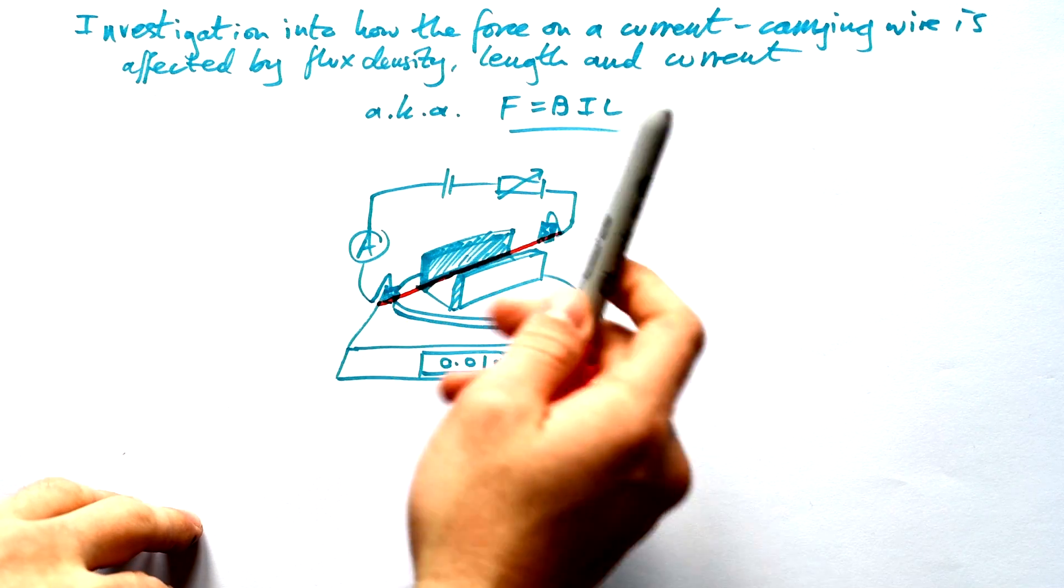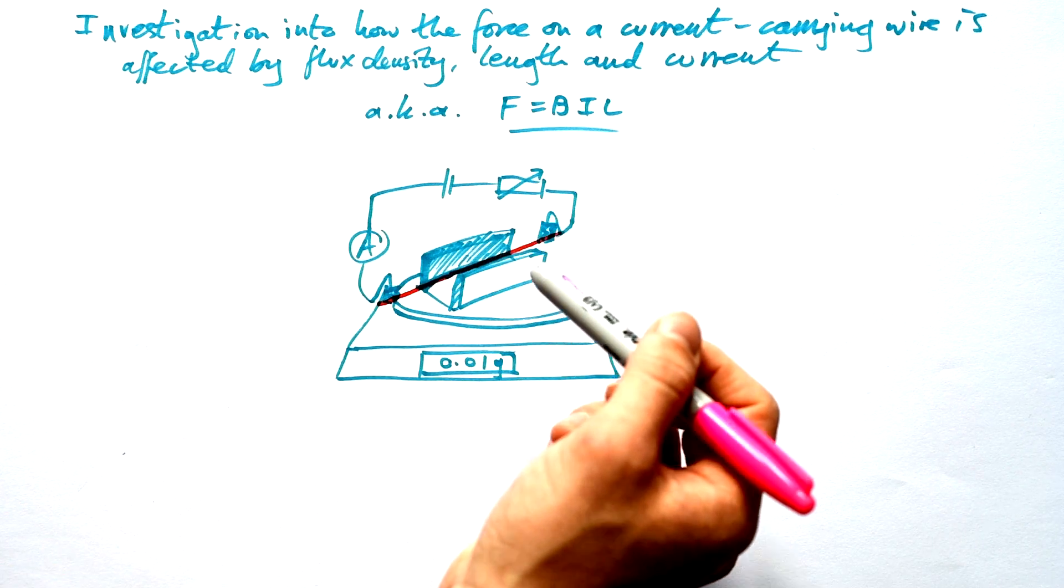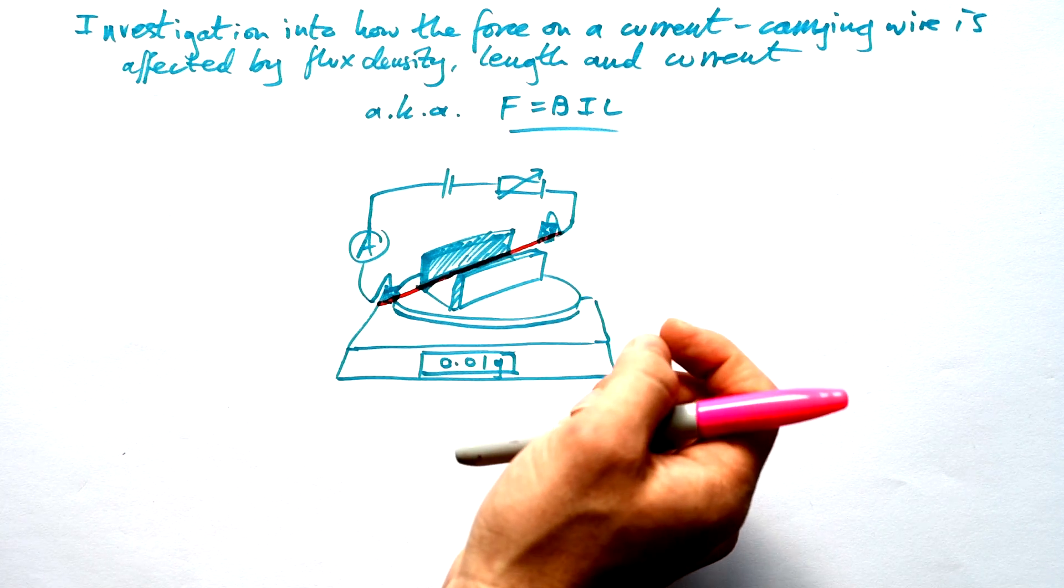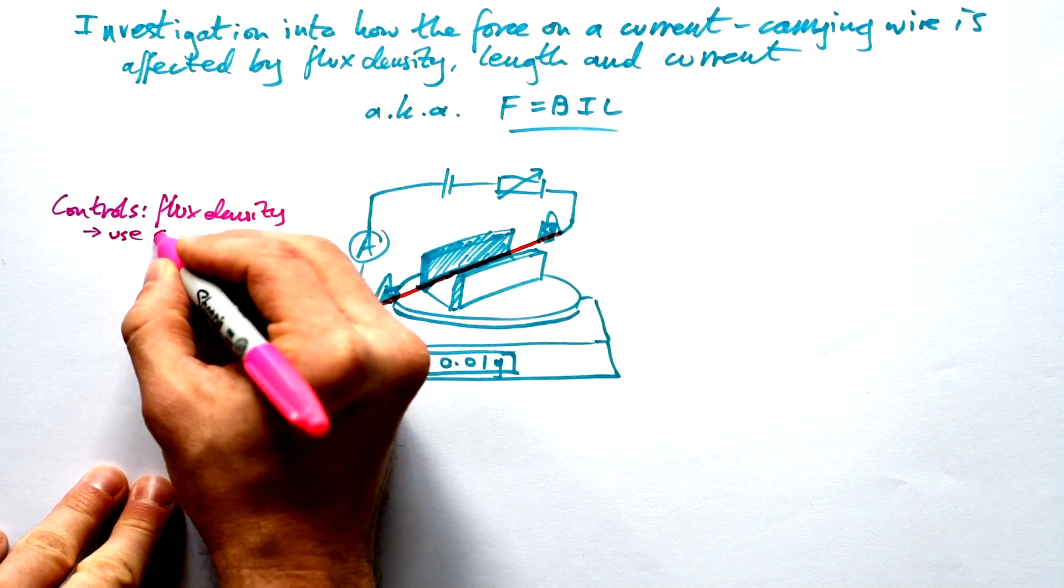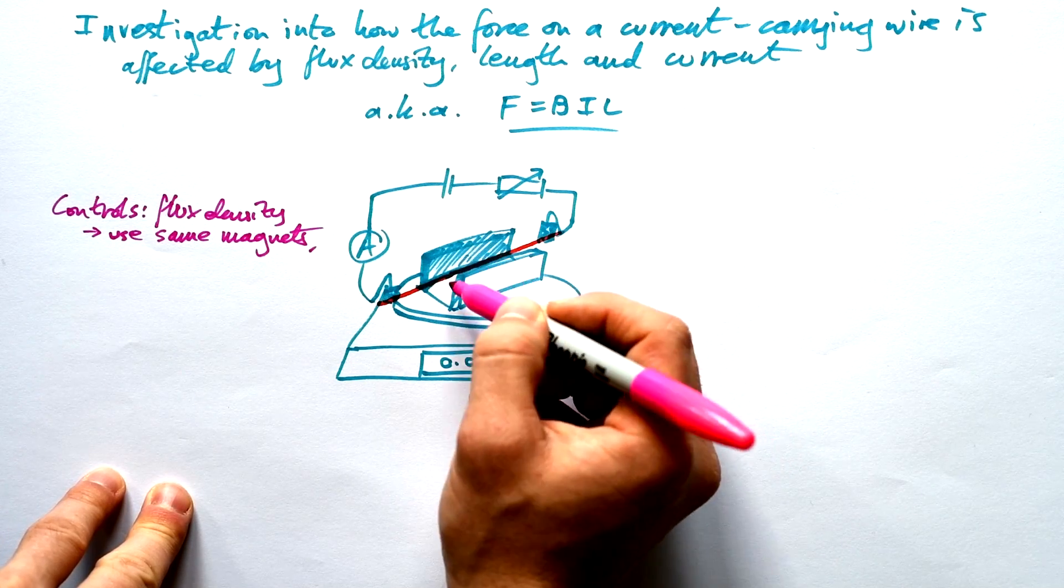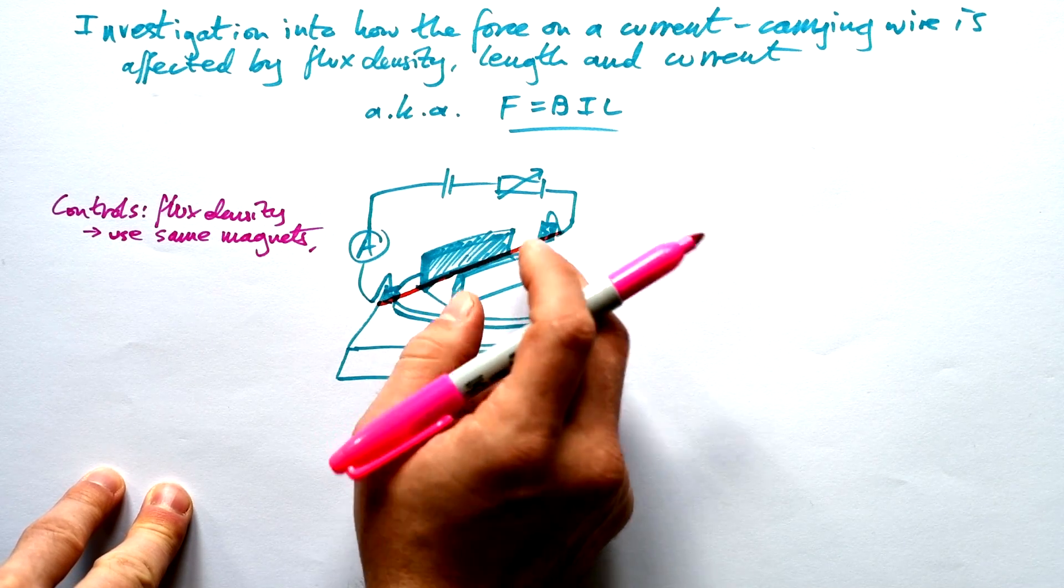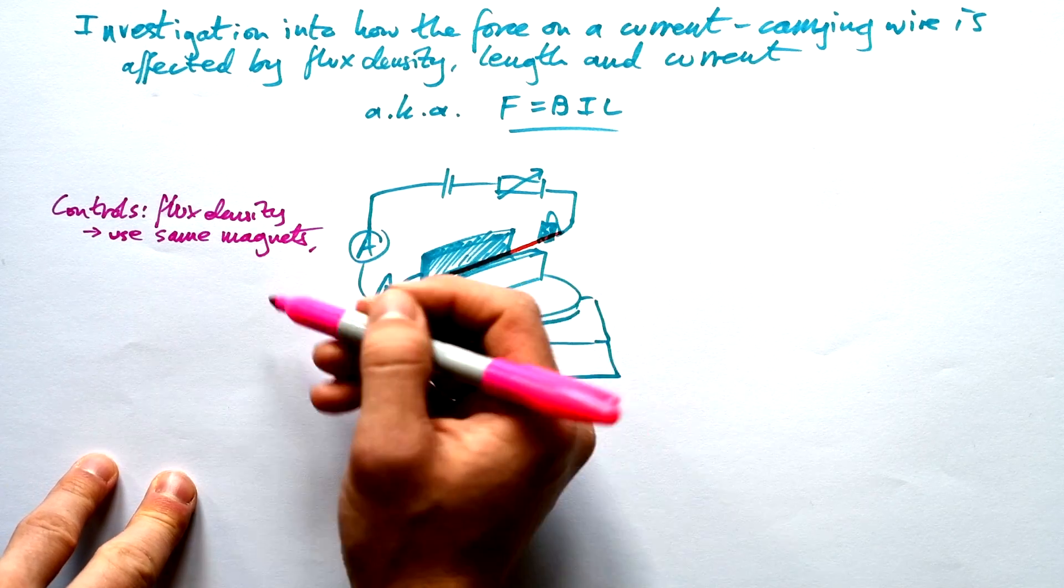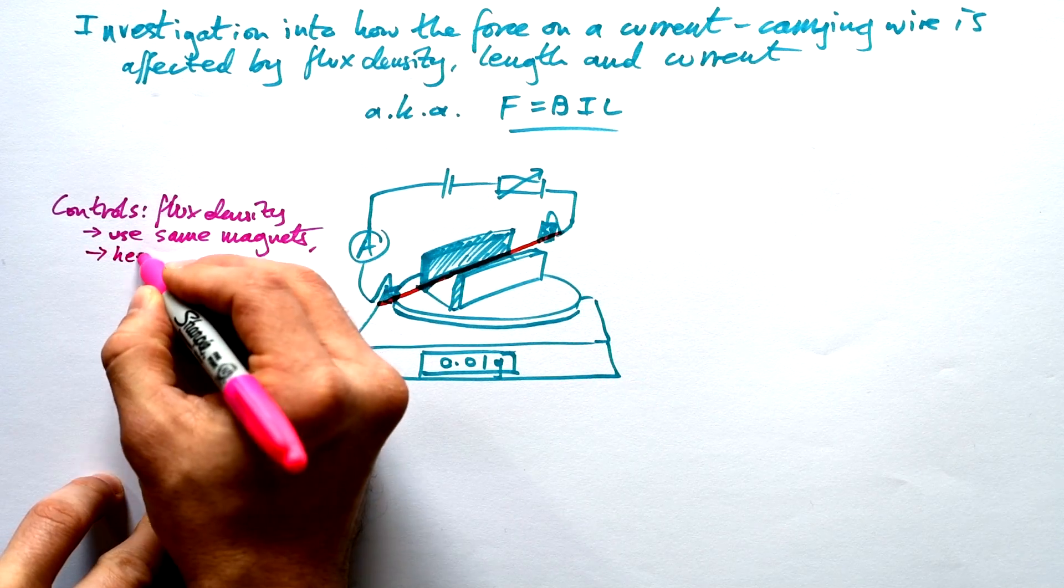Now there are a few things that you can change. We can change the flux density although that's very difficult. You need a hall probe or something like that in order to find out what the flux density is. For that you should ideally want a uniform magnetic field as well but magnets don't produce that. So we're not going to change that. We're going to keep that constant and we do that by using the same magnets but there's also something else as well. Because the field isn't really that uniform in between the magnets, if the wire moves a little bit up or down or left or right then it is going to experience a different flux density. And so in order to keep the flux density that the wire is experiencing the same, we want to use the same magnets but also keep wire in same position.